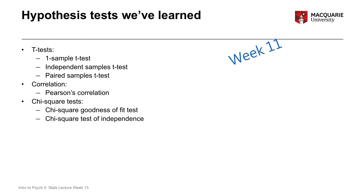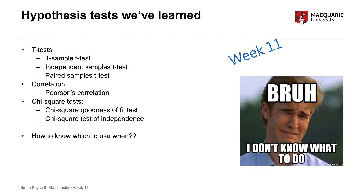So it's a lot of tests — six different tests. One of the most important things at this point is knowing what test you should use under what circumstances. This is probably what students struggle with the most: what test do I use when? How do I know if I should be doing a correlation, a t-test, or a chi-square test? What's the difference? How do I make that decision?